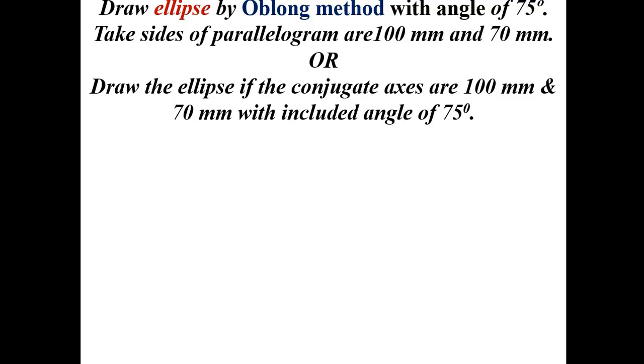The problem is: draw an ellipse by oblong method with an angle of 75 degrees. Take sides of the parallelogram as 100 mm and 70 mm. Alternatively, the problem can be stated as: draw the ellipse if the conjugate axes are 100 mm and 70 mm with an included angle of 75 degrees.